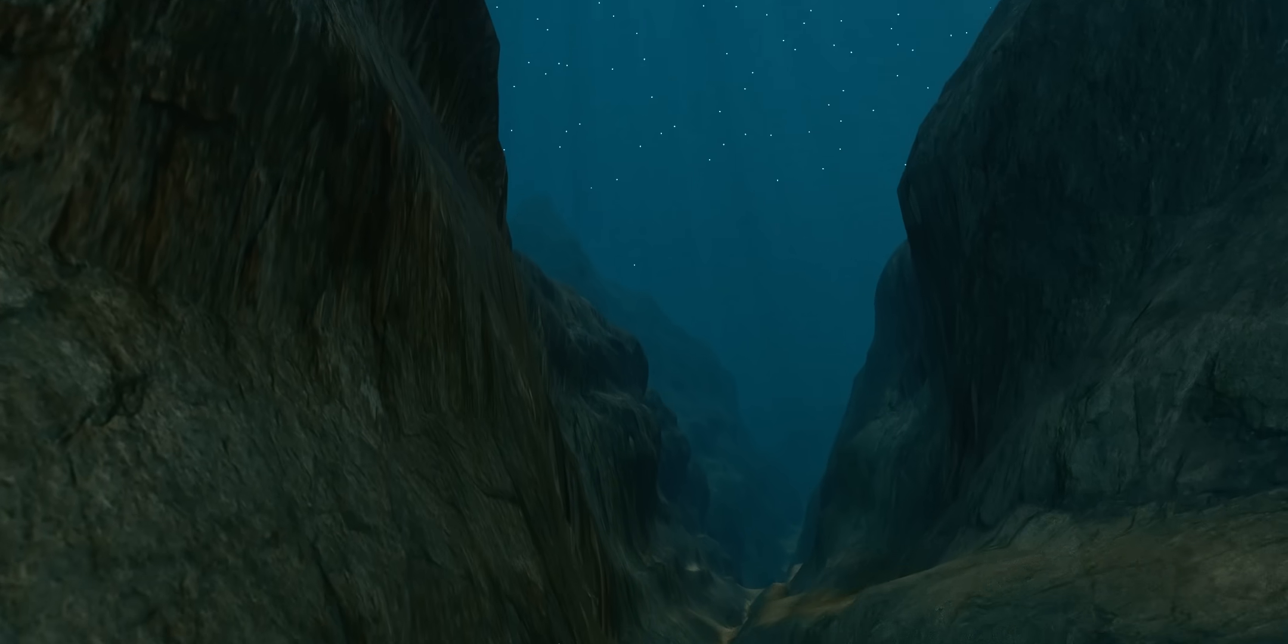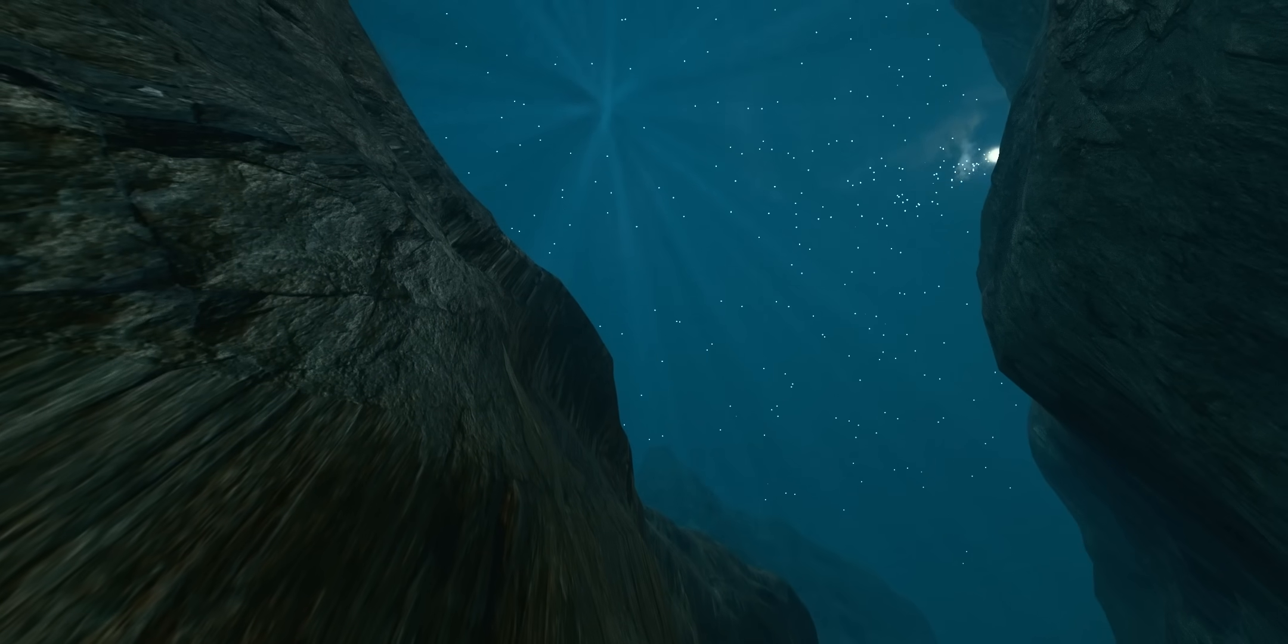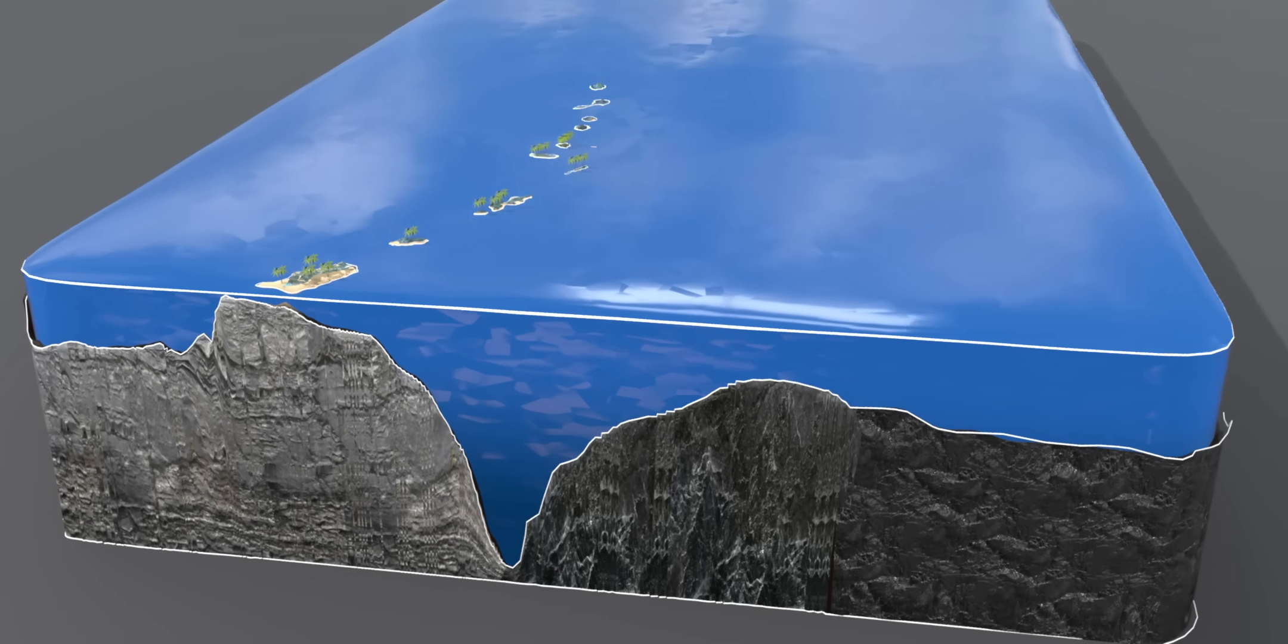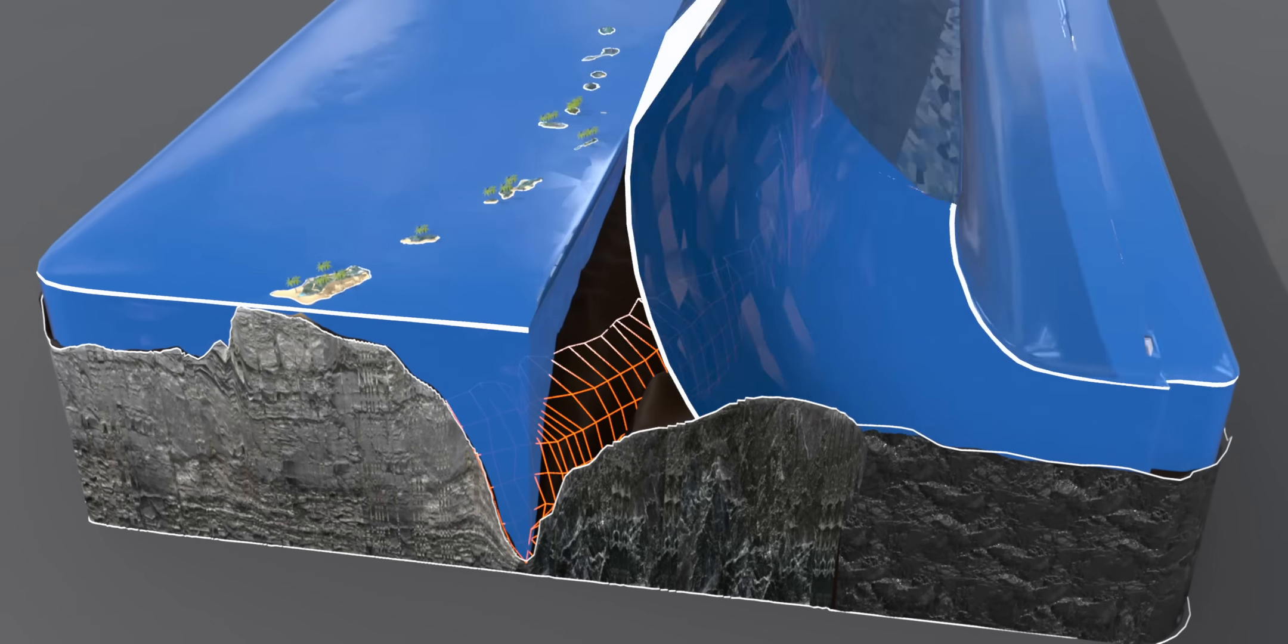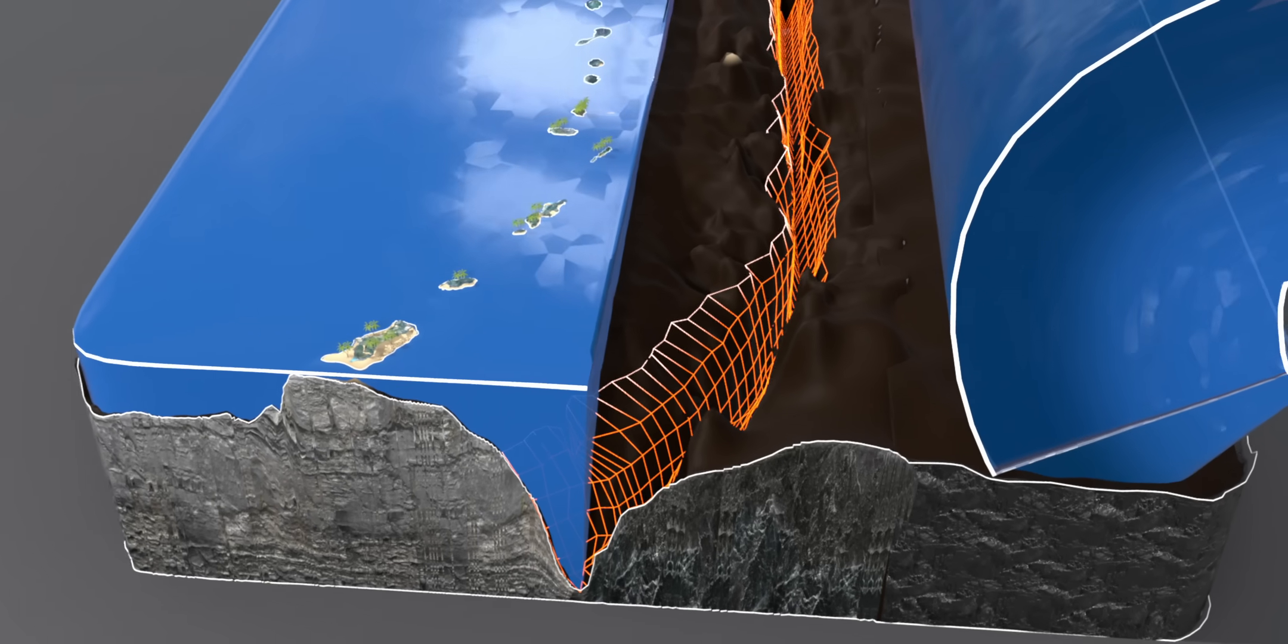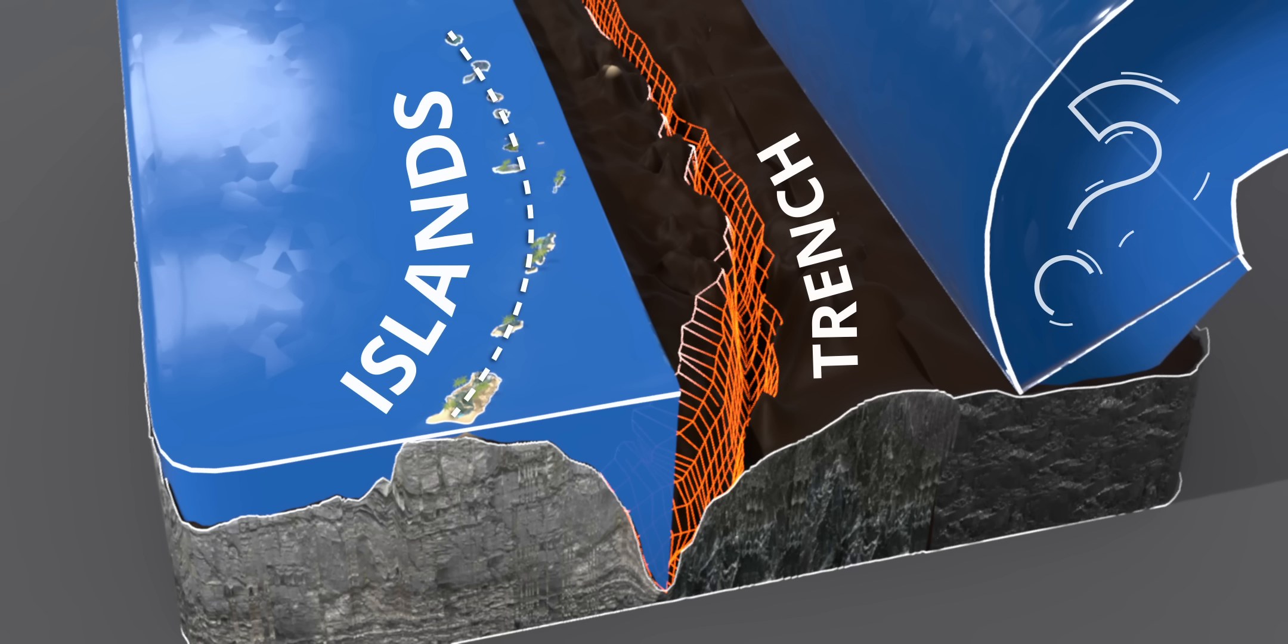Here is a surprising fact. About 200 kilometers east of this deepest point, there is a chain of 15 islands, perfectly parallel to the trench known as the Mariana Islands. On one side, a deep trench. On the other, a collection of islands. Now, can you guess how the Mariana Trench was formed?